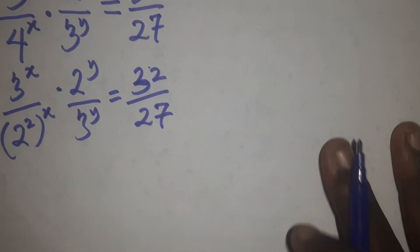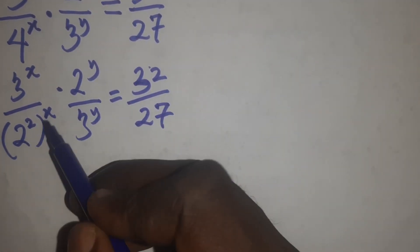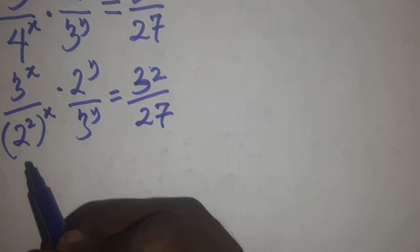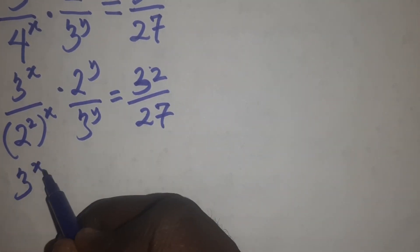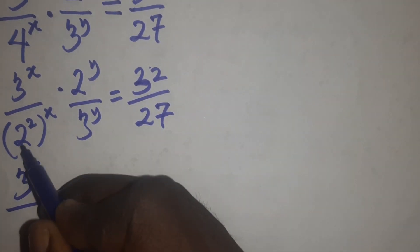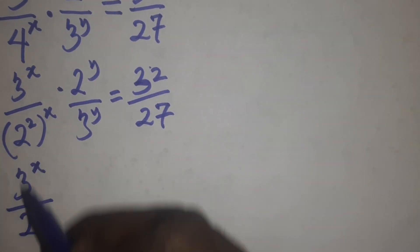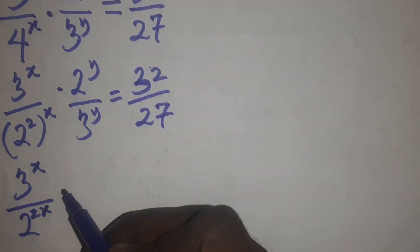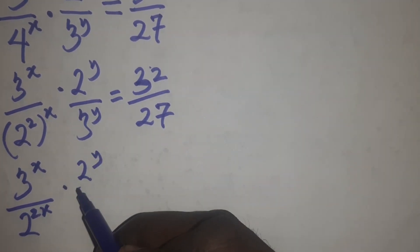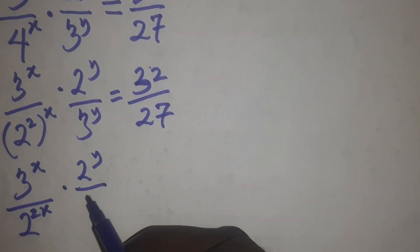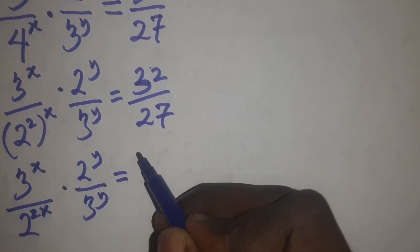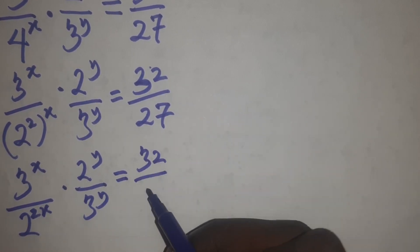I will open the bracket here and multiply the powers: 2 times x gives me 2x. So I have 3 raised to power x over 2 raised to power 2x, times 2 raised to power y over 3 raised to power y, equals 32 over 27.